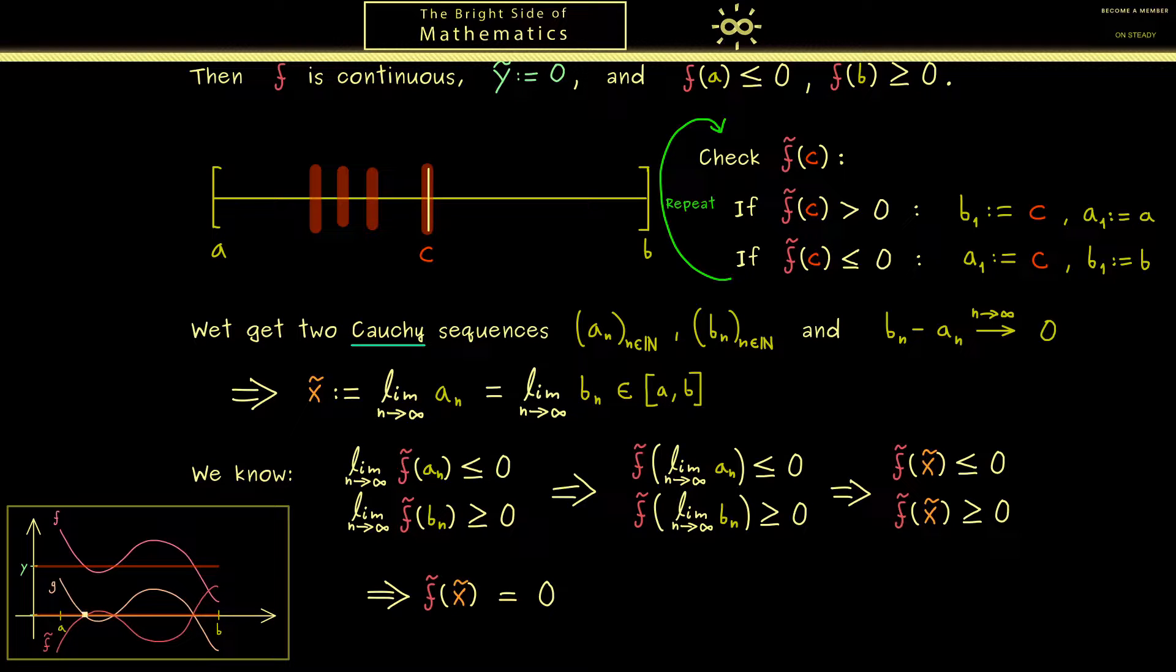Also you should see it's not a problem at all to go back to our original function f. Because you immediately see the x tilde we found is also a zero for the function g. This simply holds by the definition of the function f tilde as a flip when we need it. However the function g was defined by f minus y. And because this is now 0 this implies f of x tilde is indeed y. And that's exactly what we wanted to show so the intermediate value theorem is proven.